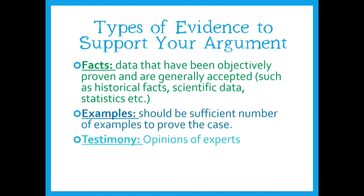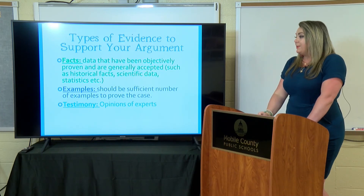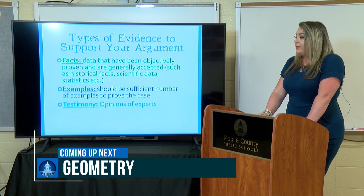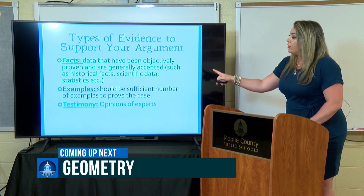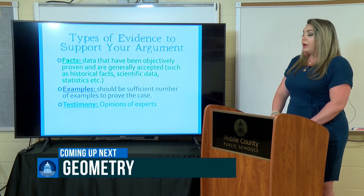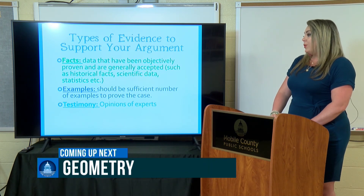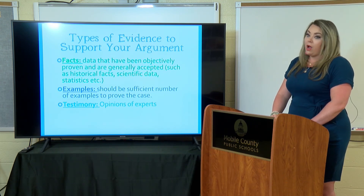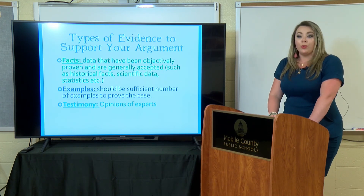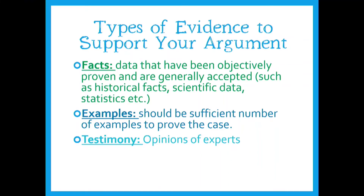The first type of evidence is facts: data that has been objectively proven and generally accepted, such as historical facts, scientific data, or statistics. The second type is examples: you need a sufficient number of examples to prove the case — having only one example is probably not strong enough, so you need multiple examples that can be proven. The last type is testimony, which is the opinions of experts. Take notes on these and then we're going to plug in a little bit of practice.